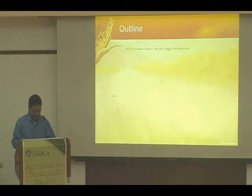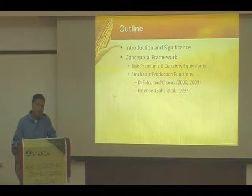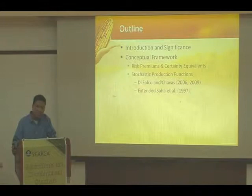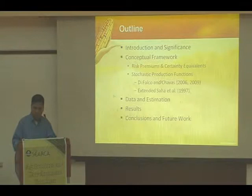What I want to cover today: first, a broad introduction of where the literature is on risk in Bt corn, then discuss some conceptual concepts needed to understand evaluation of the risk impacts of Bt corn. We'll talk about risk premiums and certainty equivalents, stochastic production functions with two specifications — the default literature laws and the extended SAHA model — then data, estimation procedures, results, and major conclusions with plans for future work.